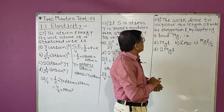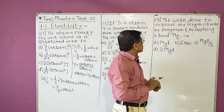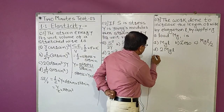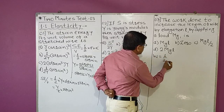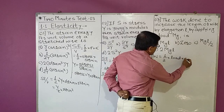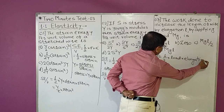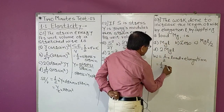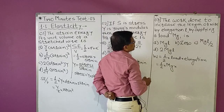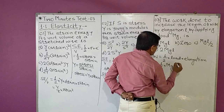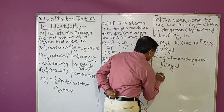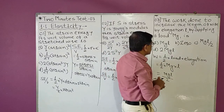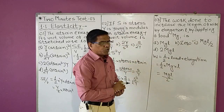Third MCQ: the work done to increase the length of a wire by elongation small l by applying a load Mg is — The formula is work done W = (1/2) × load × elongation. Here load is Mg and elongation is l, so W = (1/2) × Mg × l = MgL/2. The answer is option C: MgL/2.